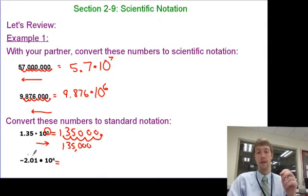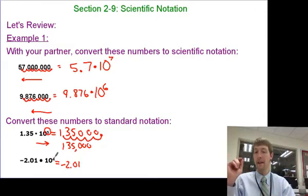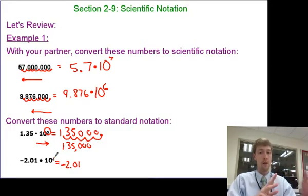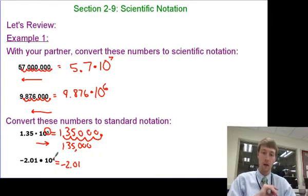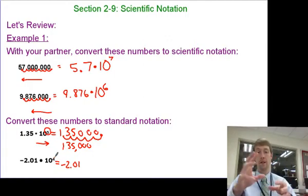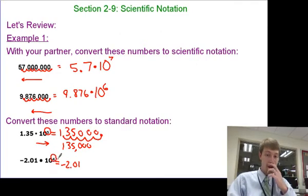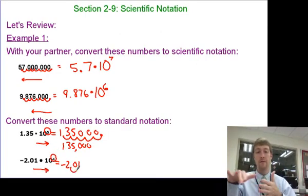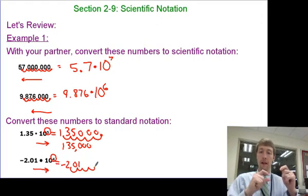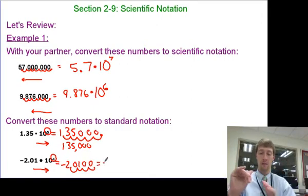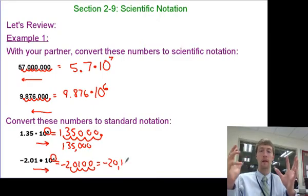The next number is negative 2.01, so my overall number is going to be negative. Notice it's not the exponent that makes this negative — it's the base that's negative, so the whole number is negative. So negative 2.01 times 10 to the fourth — that's a one with four zeros. A fast way to do that is just move my decimal to the right four times, and writing it in standard notation gives me a really big negative number.